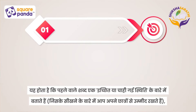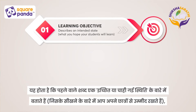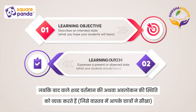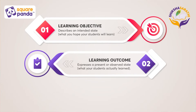A learning objective describes an intended state — what you hope the children will learn — and the learning outcome is what you observe presently, what your children actually learn.